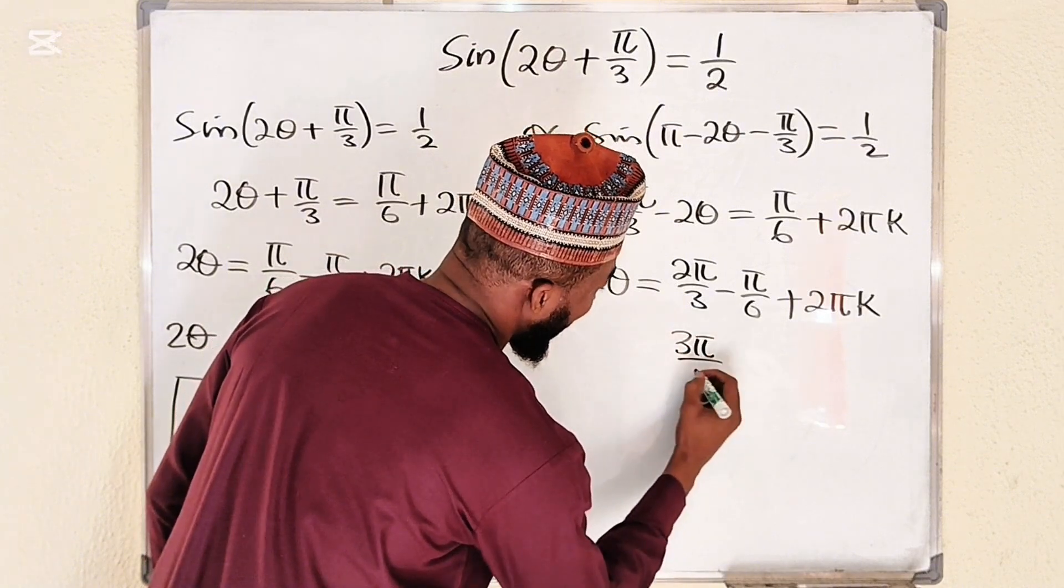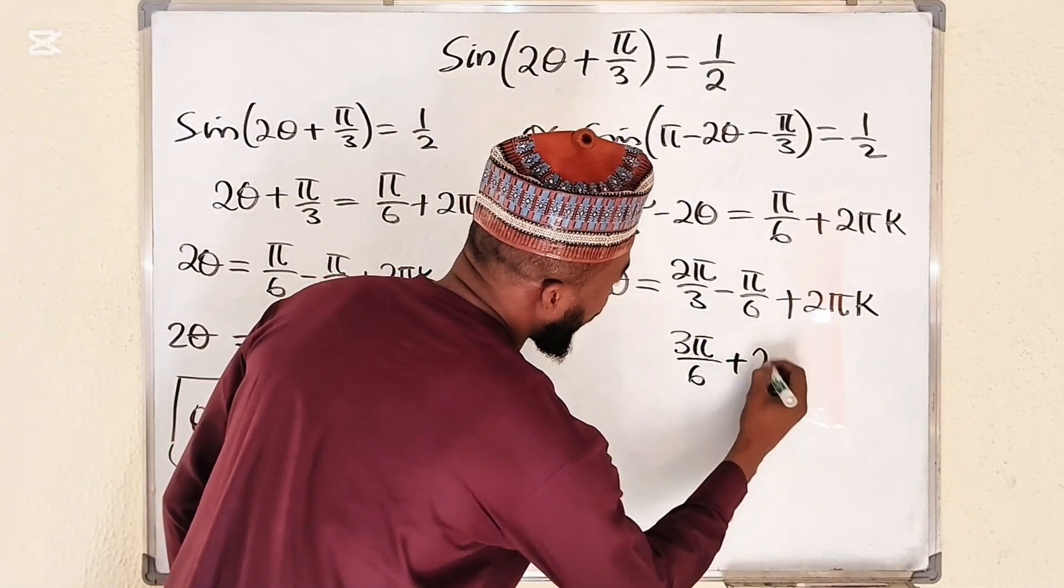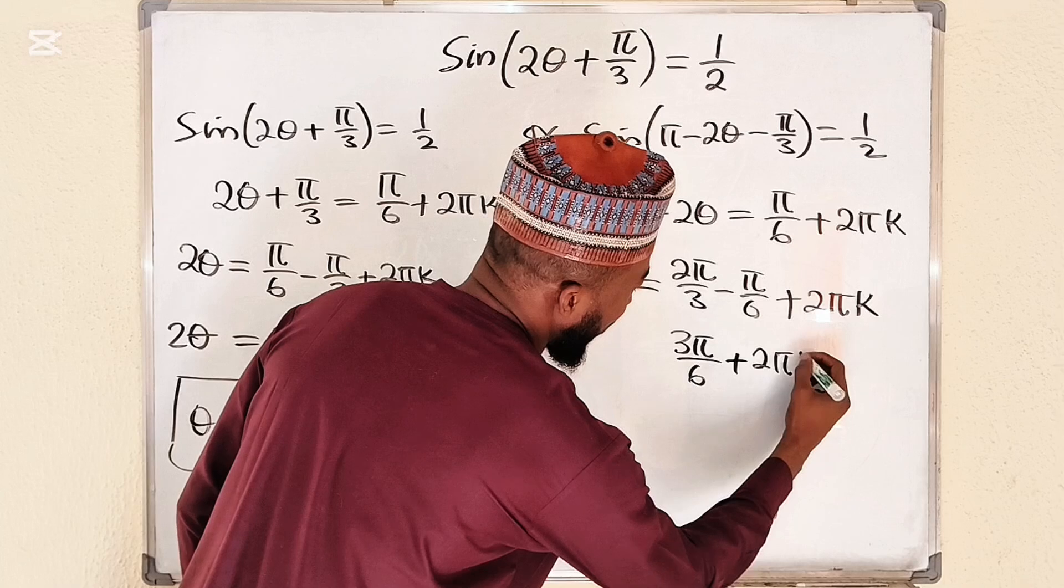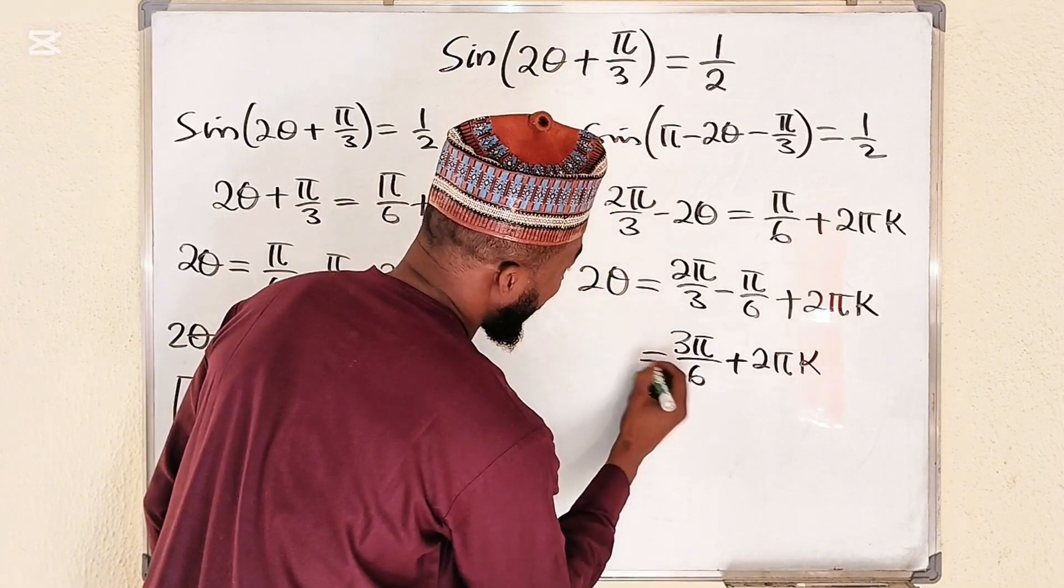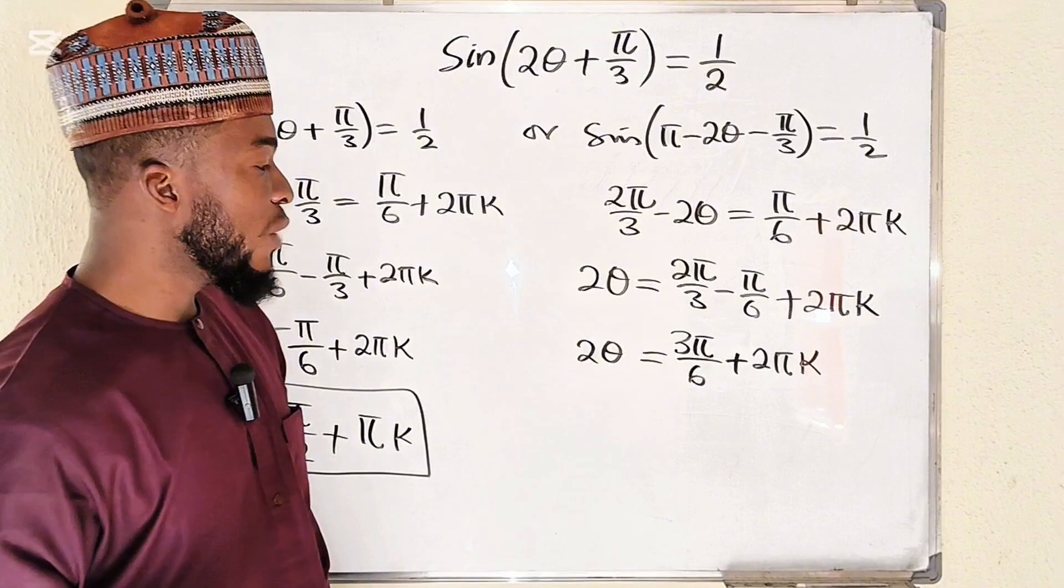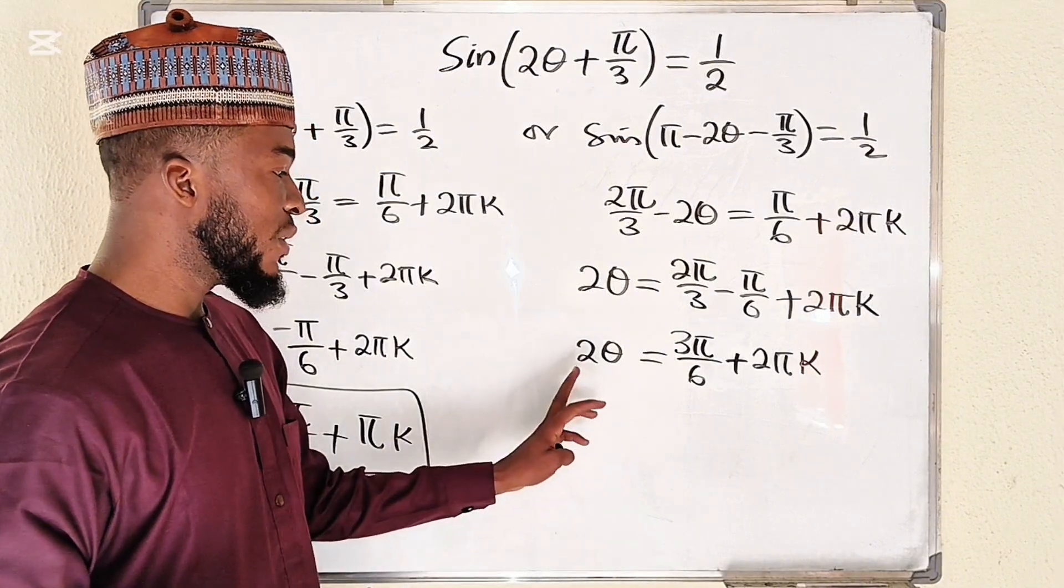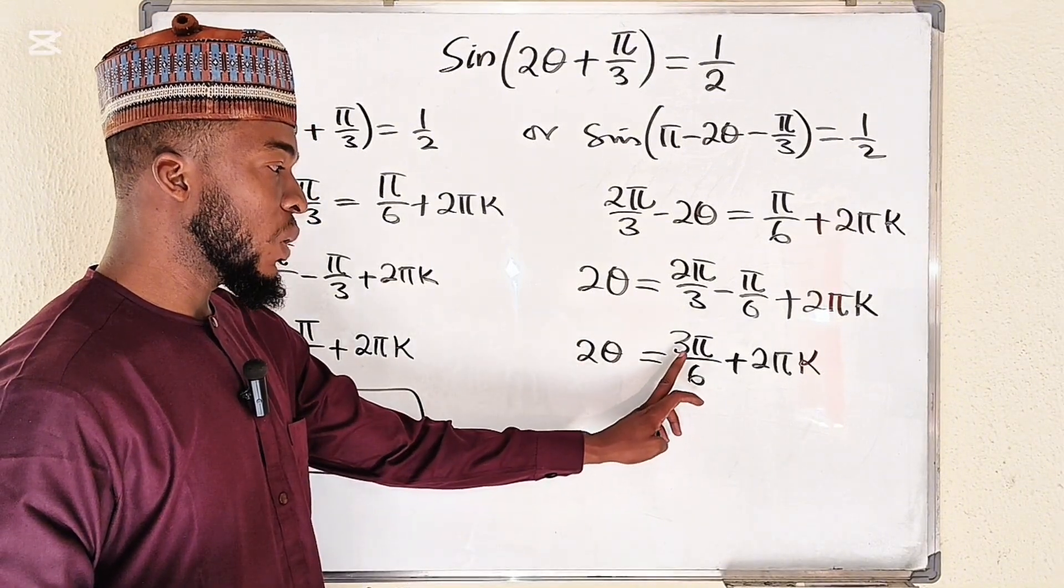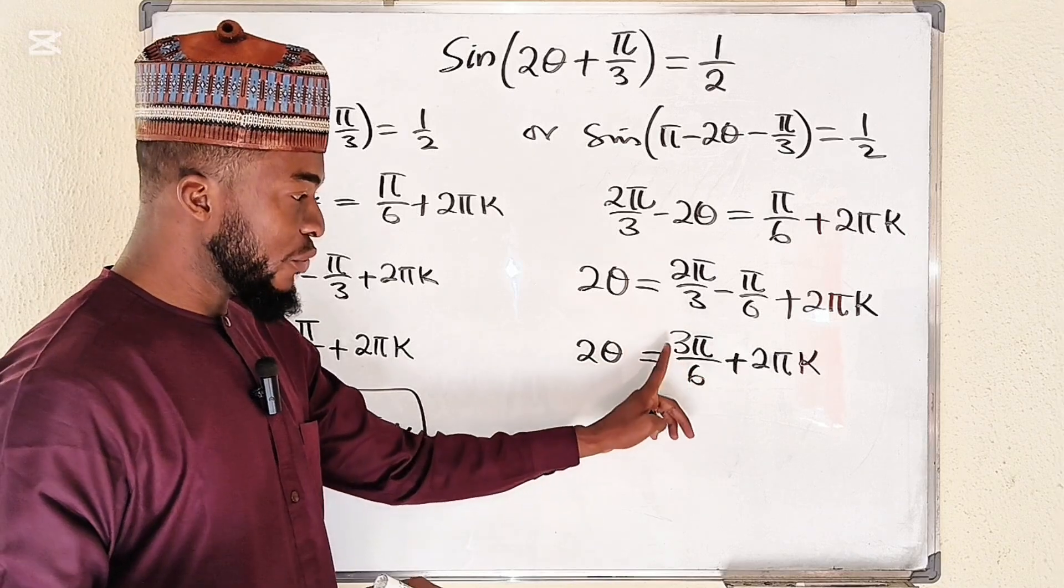Lastly we are going to divide by 2. As you divide by 2 this becomes, or you can simply reduce this to the lowest terms. 3 into 6 is exactly 2 times, so we assume that this is just pi divided by 2.